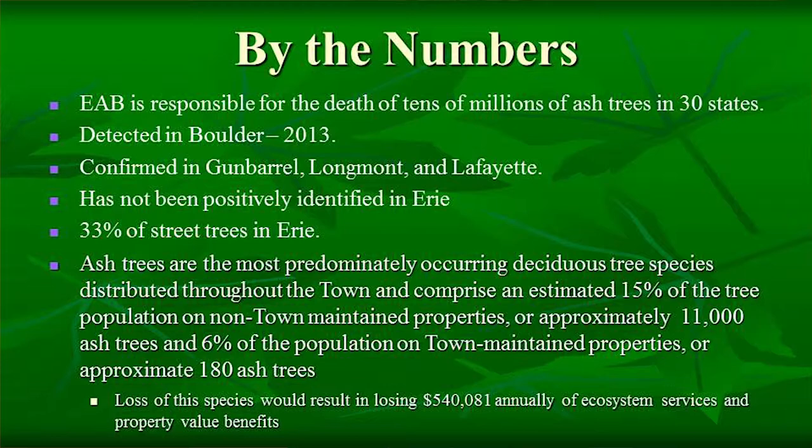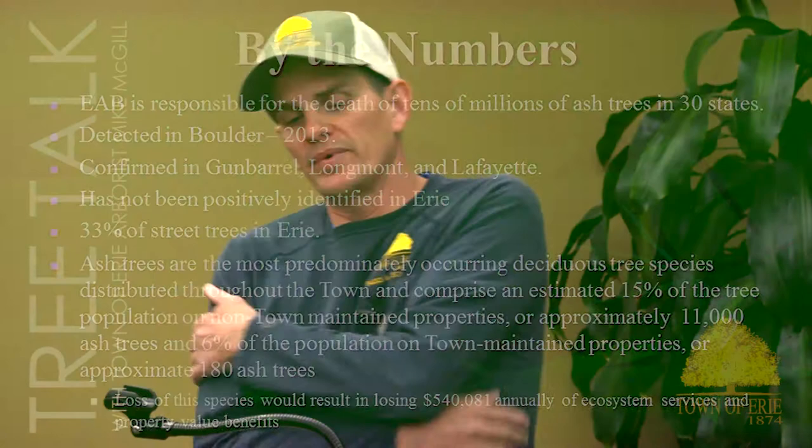By the numbers: EAB is responsible for the death of tens of millions of ash trees in 30 states. Ash trees are the most predominantly occurring deciduous tree in town, comprising an estimated 15% of the tree population on non-town-maintained properties — approximately 11,000 ash trees. It's 6% of town-maintained properties, or about 180 ash trees. I have not planted an ash tree in my 13 years here, knowing EAB was eventually coming. Despite that, one in every three street trees between a sidewalk and street is an ash tree.